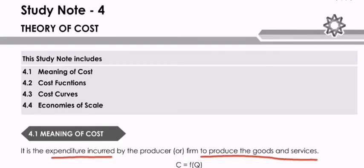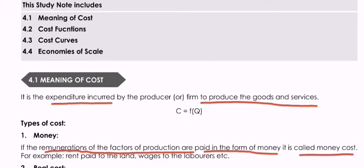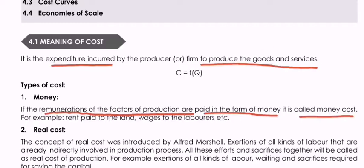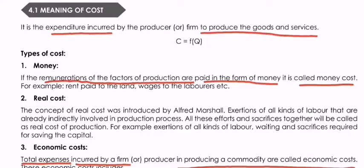In Theory of Cost, let us understand what cost is and what cost types are relevant in economics. In economics, there are different types of cost which you don't usually encounter in accounting terms. First, the meaning of cost — it is an expenditure incurred by the producer or firm to produce goods and services. The alternative name for cost is expenditure. That is the meaning of cost.